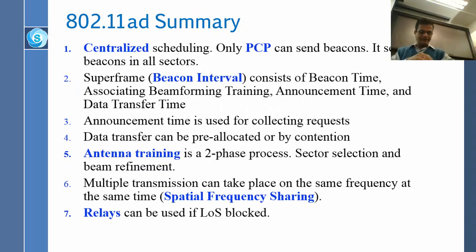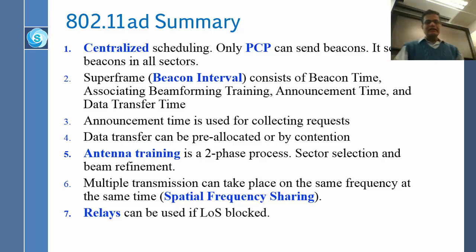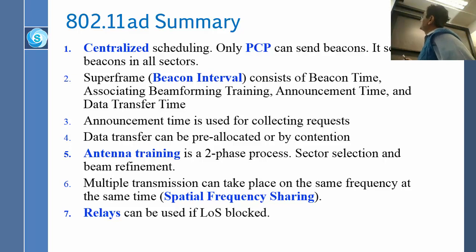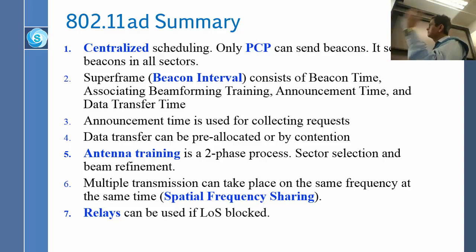That brings us to the end of 802.11ad and its seven key points. First, centralized scheduling — only the PCP can send the beacon, and it sends beacons in all sectors so it must send multiple times. There is a super frame which is the beacon interval, consisting of the beacon time, association frame, beam forming training time, and data transfer time. Announcement time is used for collecting requests, and data transfer can be pre-allocated or by contention. Antenna training is a two-phase process: sector level and beam level. Then there is spatial sharing with parallel transmission, and there are relays.